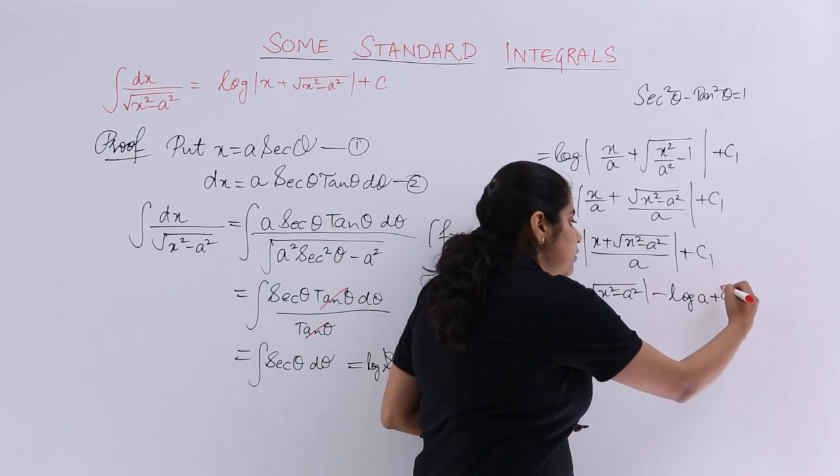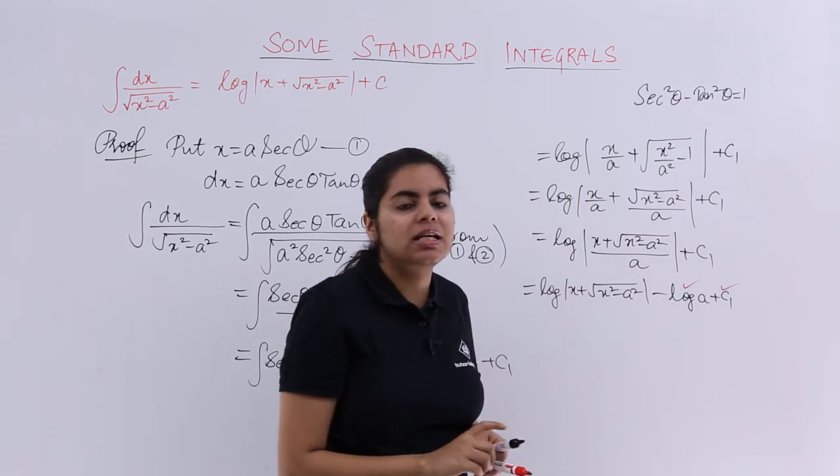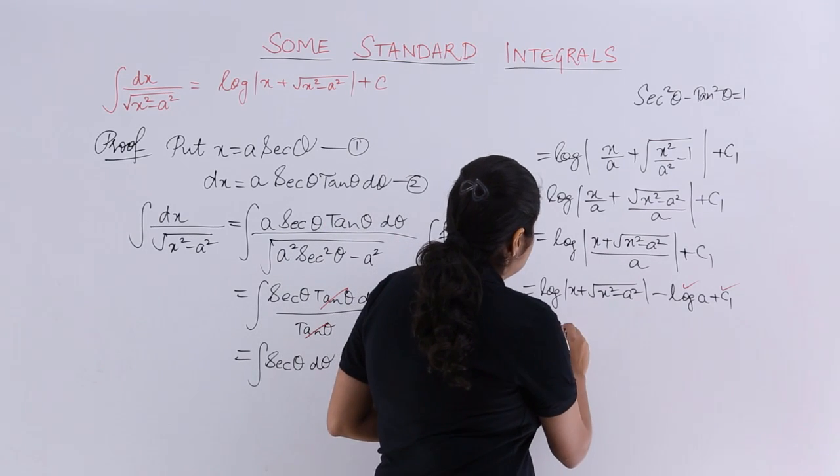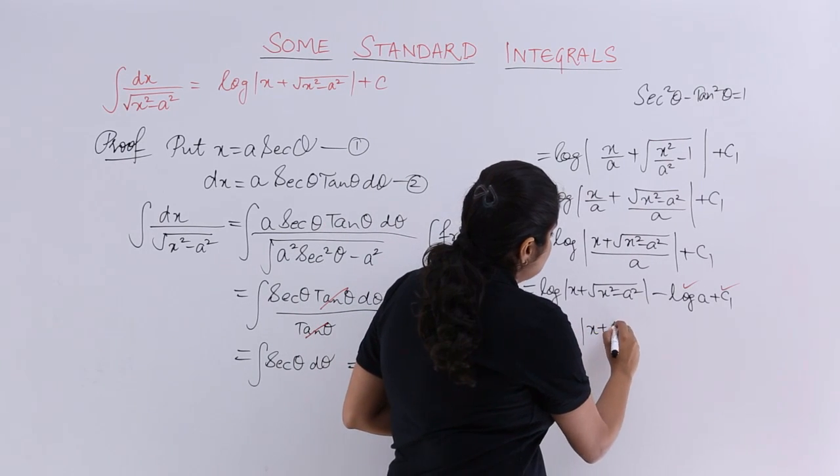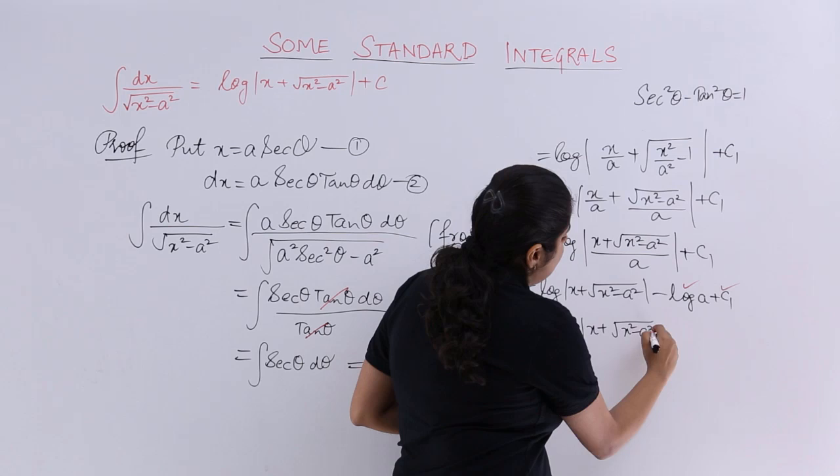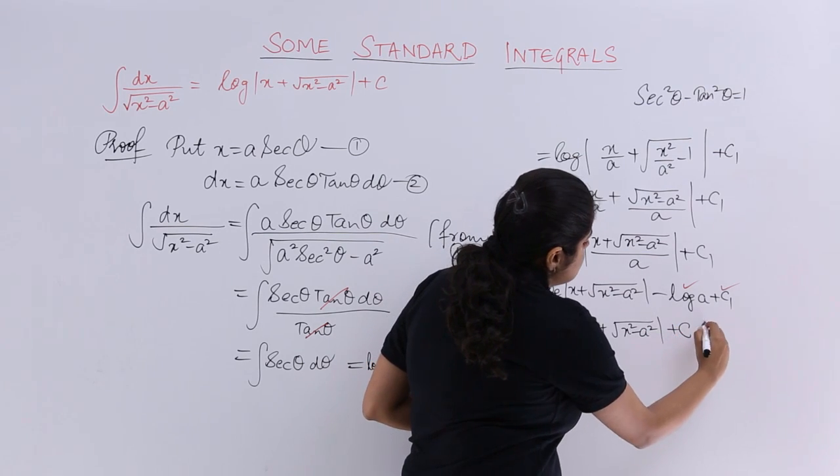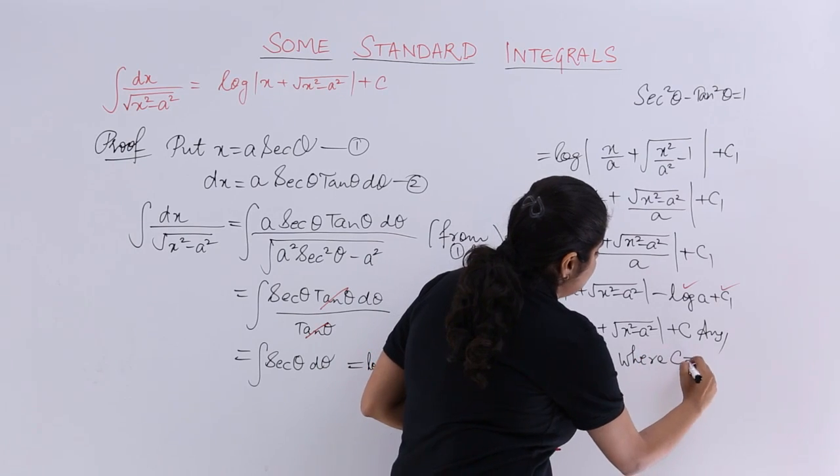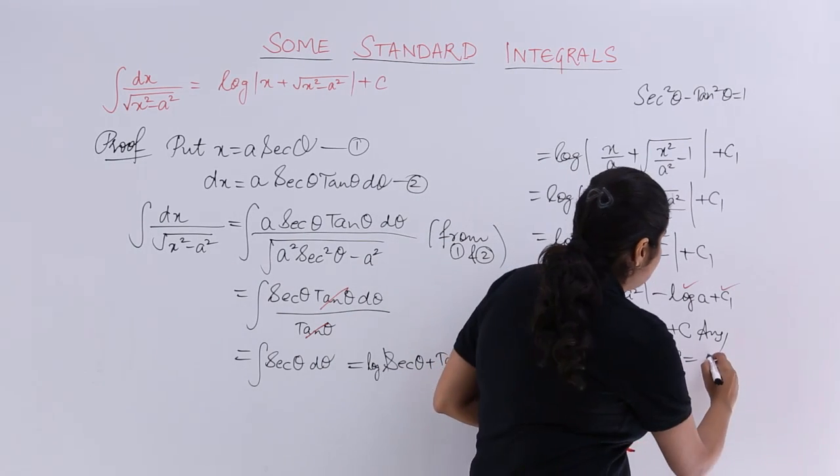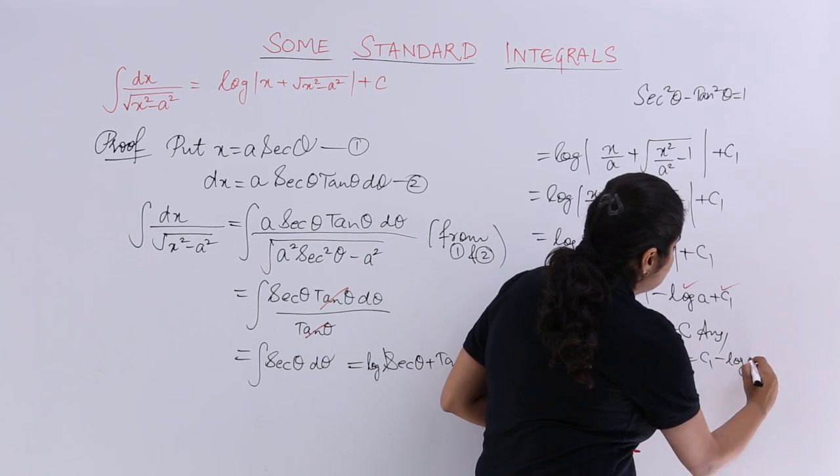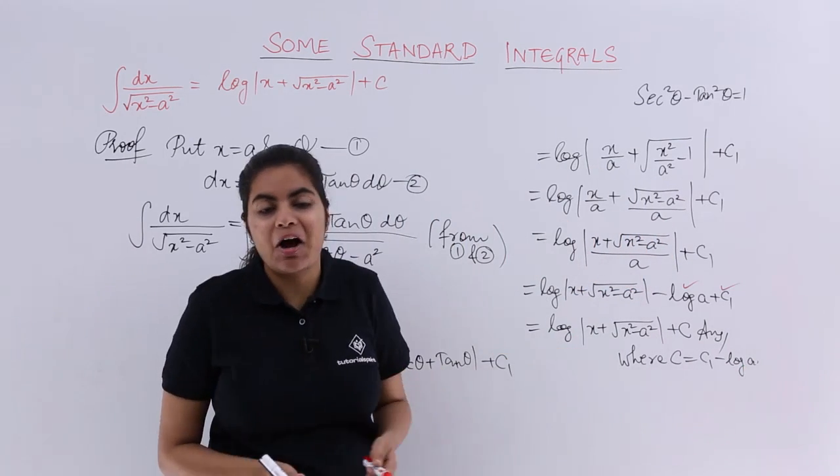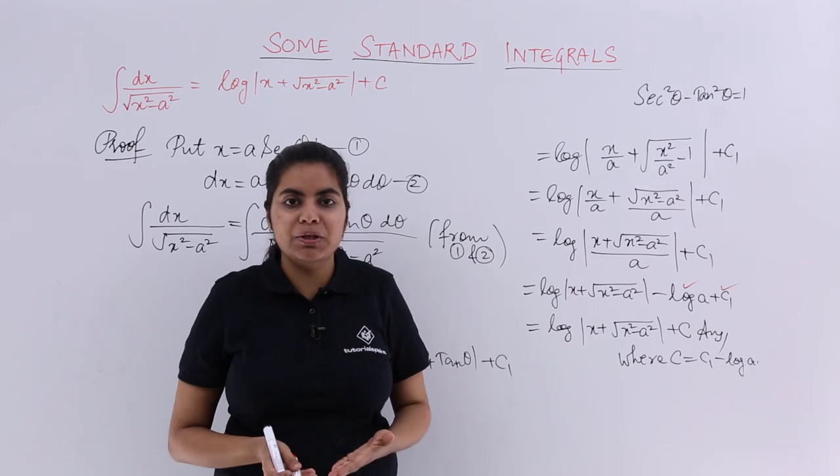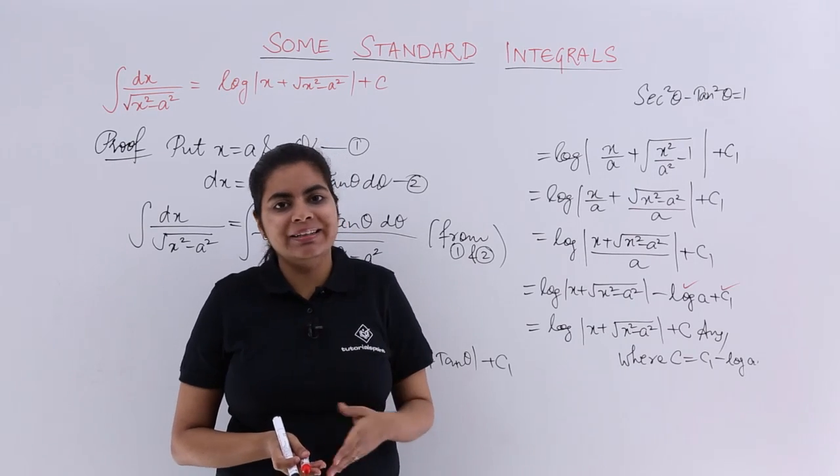So even this is a constant, this is a constant. So two constants can be merged into another constant. So it is nothing but log x plus under root x square minus a square plus c. And what is c? I will have to write where c is my new constant and that is equal to c1 minus log a. So that is how you do these kind of proofs. But you have to always remember the formulas and yes, understand the proof.